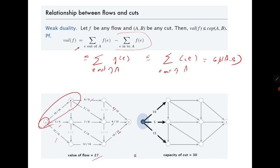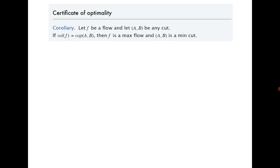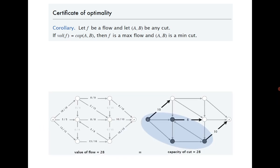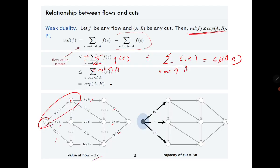The next important result: if for any flow F and any cut AB the value of flow equals the capacity of AB, then F must be a maximum flow and AB must be a minimum cut. For any other flow F', its value is at most the capacity(AB), which equals value F, so F is maximum. Similarly, any other cut A'B' has capacity at least the value of the flow, which equals capacity(AB), so AB is minimum. The example shows flow value 28 equals cut capacity 28, confirming both.